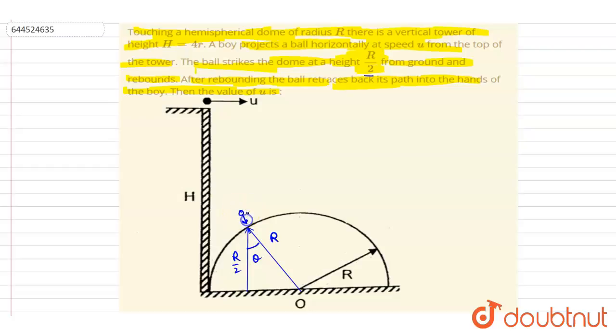Certainly it will strike at an angle so that it retraces its path, so it will be striking along the normal, because the retrace of path is only possible when it will strike normally and it will be an elastic collision. If I write down R by 2 equals R cos theta, from here you will get theta equals 60 degrees.